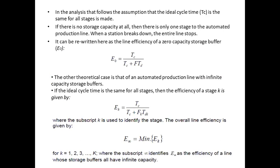For a zero-capacity storage buffer — meaning no storage buffer at all — the line efficiency equation is the same as discussed in the last lecture: E = tc / (tc + F·td), where tc is the ideal cycle time, td is the downtime, and F is the frequency of breakdowns. This gives the average production time tp.